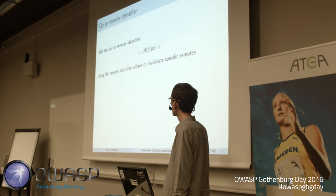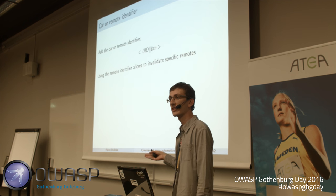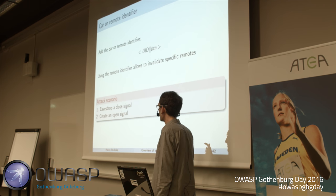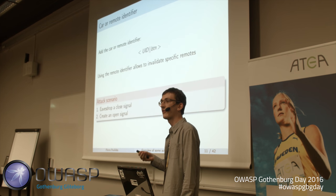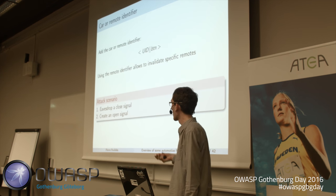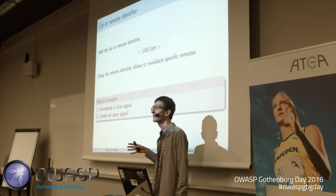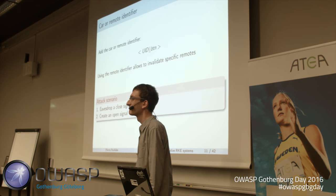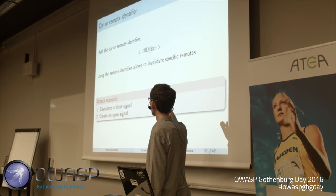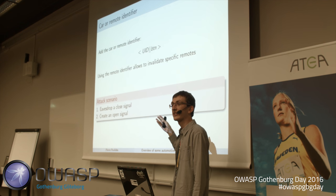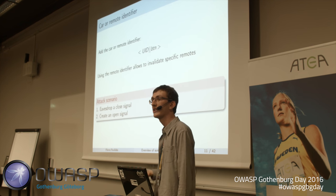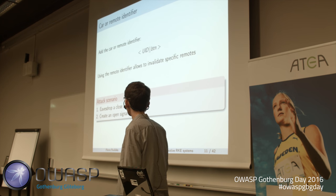Now we know which button is pressed and which remote is sending the message. But there's still an attack: if the attacker is close enough — within 100 meters — they can eavesdrop a close signal and get the UID and the button. From there, the attacker can change the button from close to open and replay that message, and the car will open. We need integrity protection for the message.